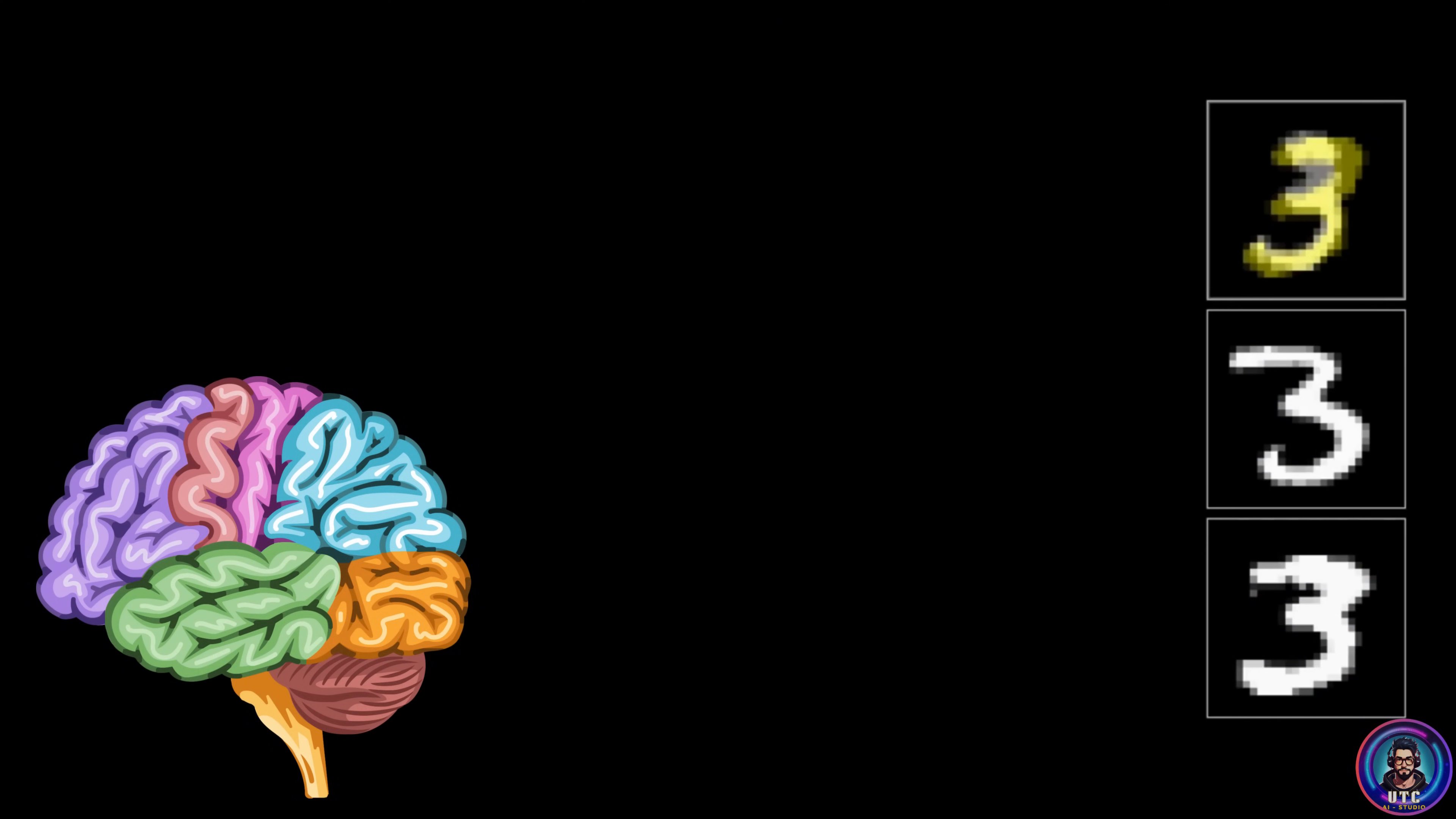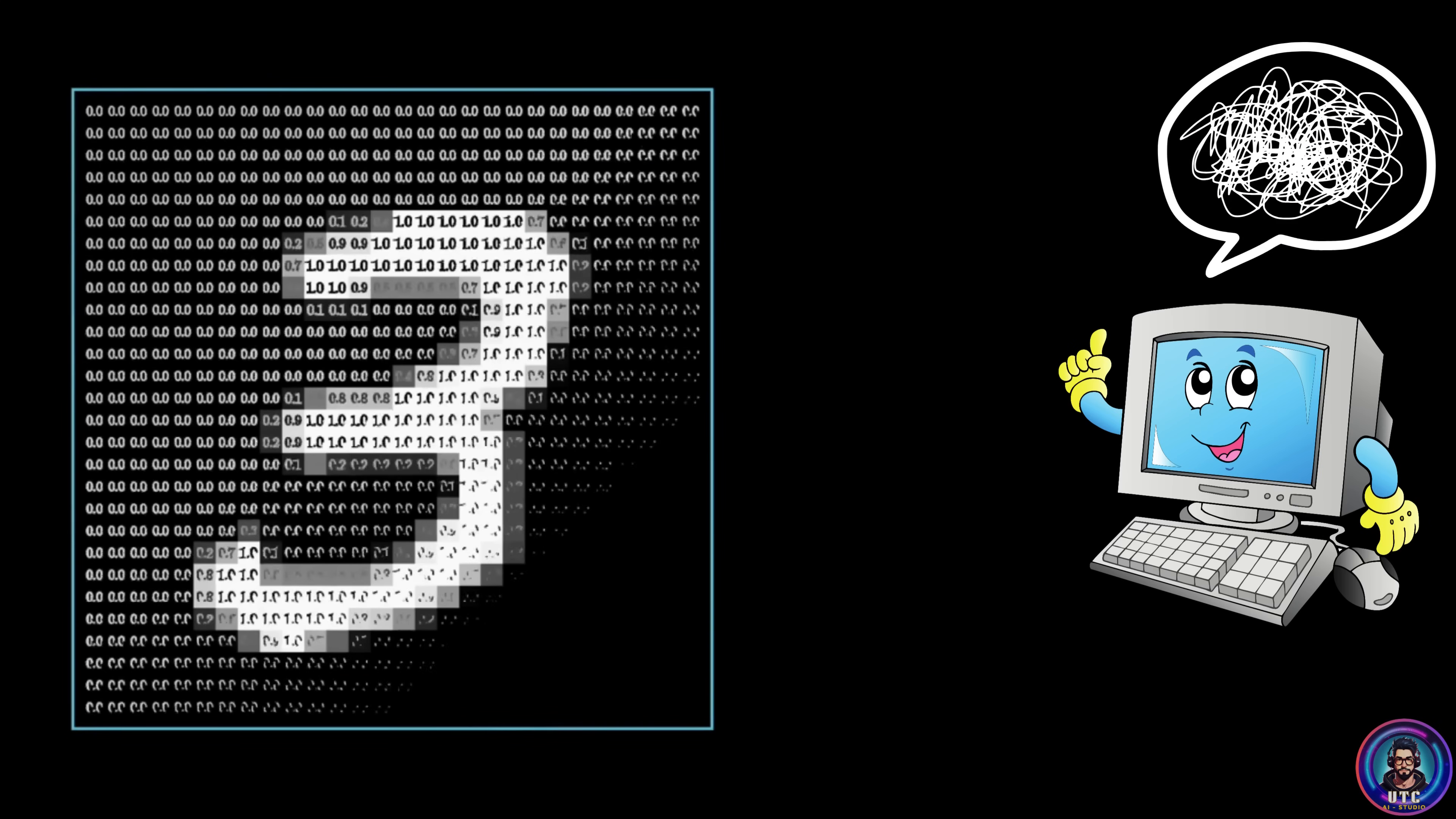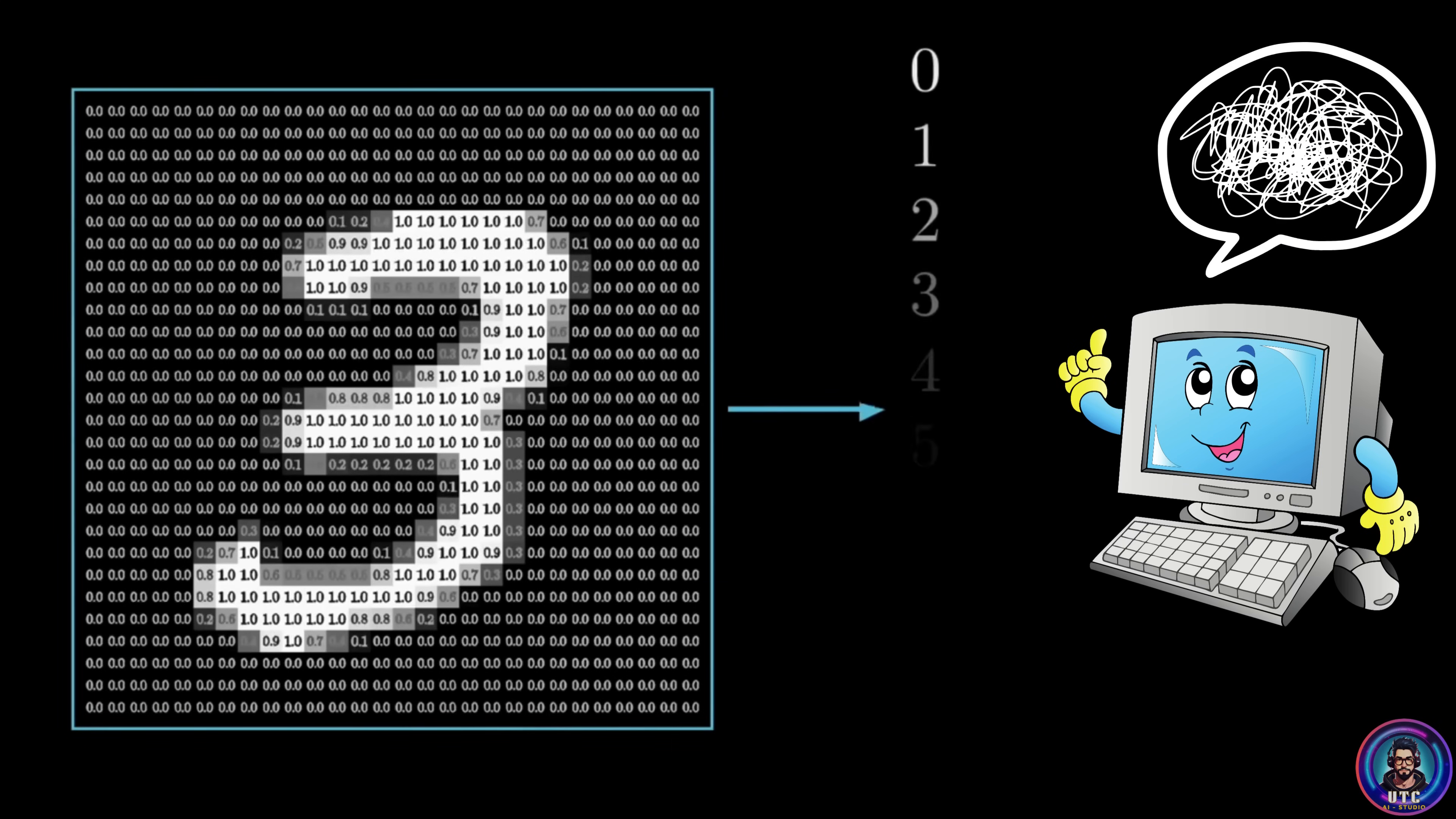So we all know that this is a 3, no question. I mean, it's sloppy, it's low resolution, but our brains just get it instantly. You could show hundreds of different versions of a messy 3, and our brain knows it every single time. But for a computer, this is a huge challenge because a computer doesn't see a 3. It just sees a grid.